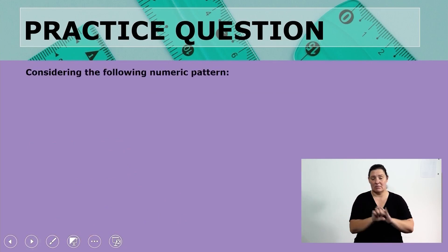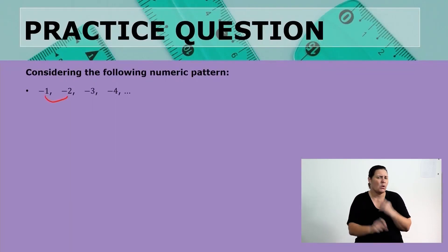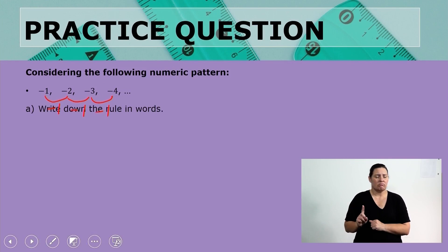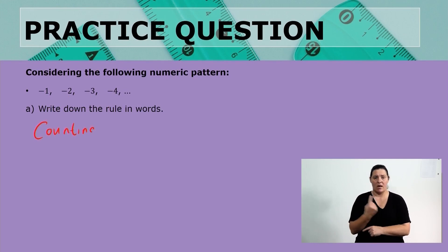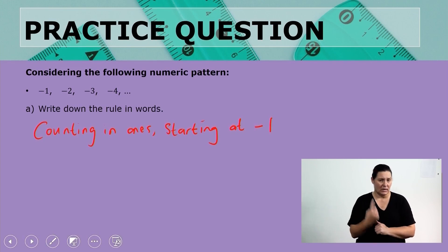Let's look at the next example. Now I have the pattern: negative 1, negative 2, negative 3, and negative 4. Notice that the pattern is going down in value — the numbers are becoming smaller. This means I am subtracting a certain value. If you said negative 1, you are correct — we are subtracting 1 each time. So, how can we describe this in words? We are counting backwards in 1s, but we started at negative 1.